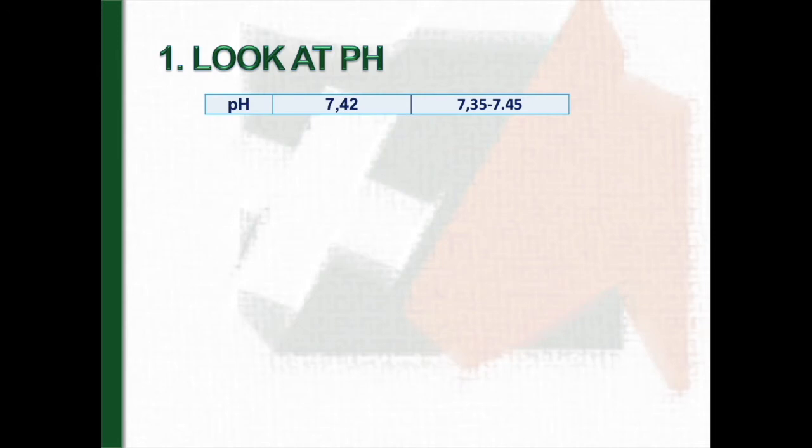The first step is to look at the pH. In this case, the pH is 7.42. It is at the upper limit of normality, but still normal.